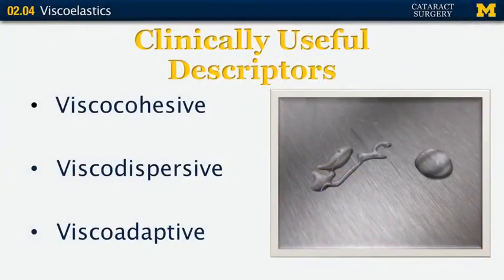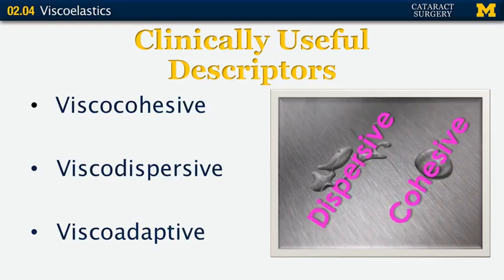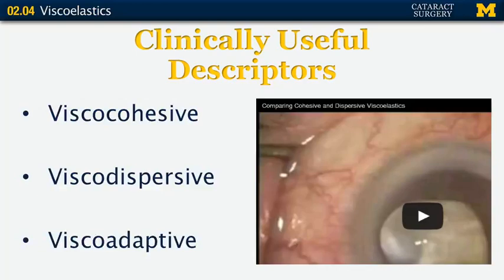Take a look at the picture to your right. Which of those is a cohesive viscoelastic and which is a dispersive? This one is cohesive and this one is dispersive. I'm going to have you link to this video — it's an ophthalmologist preparing to do cataract surgery, squirting a little of each viscoelastic onto the surface of the cornea. The cohesive looks like a little ball on top of the cornea, and the dispersive actually coats — it's a good way of maintaining lubrication of the corneal surface during cataract surgery.